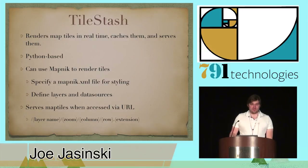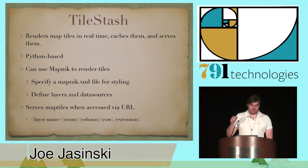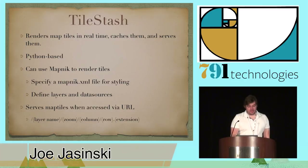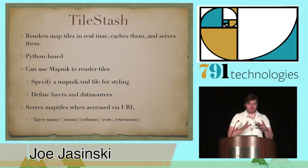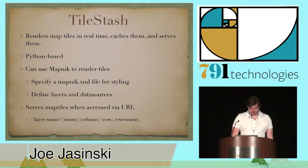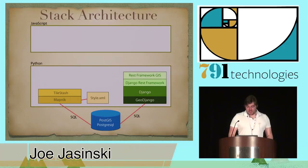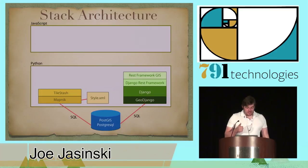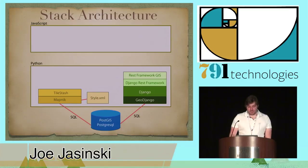TileStache takes a very simple URL scheme: you run the server, visit a URL in your browser, and load a single map tile. You're basically giving it a layer name (defined in a configuration), a zoom level, a column and row corresponding to a tile location, and a geo-coordinate. Here's what the stack looks like now that I've added TileStache on top of Mapnik and Django REST Framework GIS on top of Django.